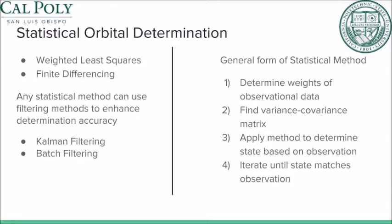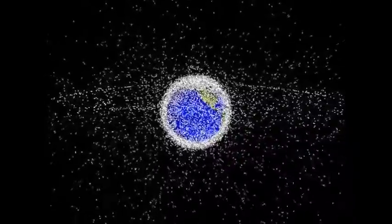The process of statistical orbit determination is then to minimize the cost function reliant on random error. This is done by determining a variance-covariance matrix and applying it methodically to the observational data. The method iterates until the error is small enough to allow for convergence. Additional filtering methods can be used to improve the reliability of the data.